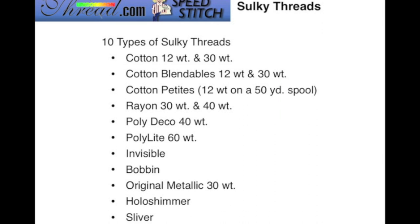Sulky has ten different types of thread on the market and, as you can see here by the list, they run the gamut from cotton thread to rayon thread to polyester thread, invisible and bobbin thread, and decorative threads to include the original metallic thread, hollow shimmer, and sliver.